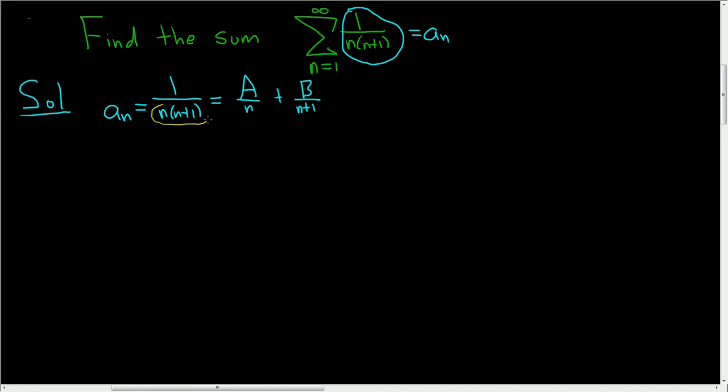When you multiply the left-hand side by n and n plus 1, you just get 1. On the right-hand side, we're left with a times n plus 1 because the n cancels. And then b, and again we're multiplying all of this by n and n plus 1, so n plus 1 cancels. We're left with n.